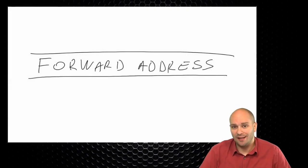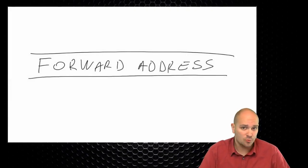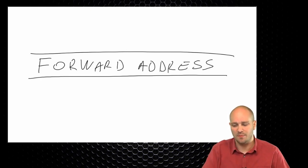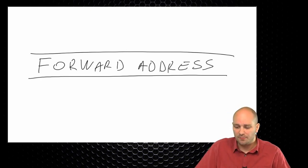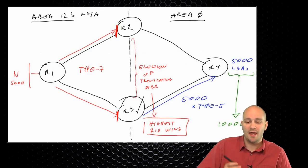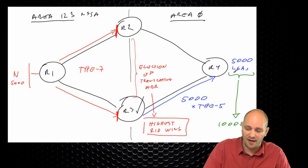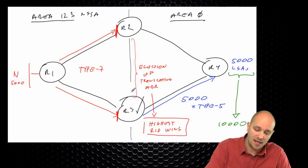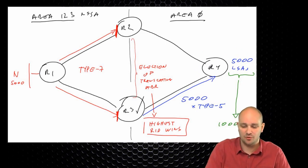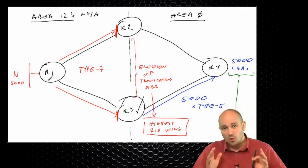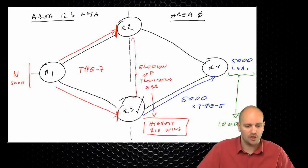The next thing we're going to talk about is the forward address, and this is where things become rather complicated. They become complicated because the forward address goes very deep in OSPF SPF behavior, but it is also something that makes certain behavior possible. It allows R4, based on only 5,000 LSAs generated by R3, to have 10,000 routes that take traffic different ways. Let's take a look at how forward address behaves.